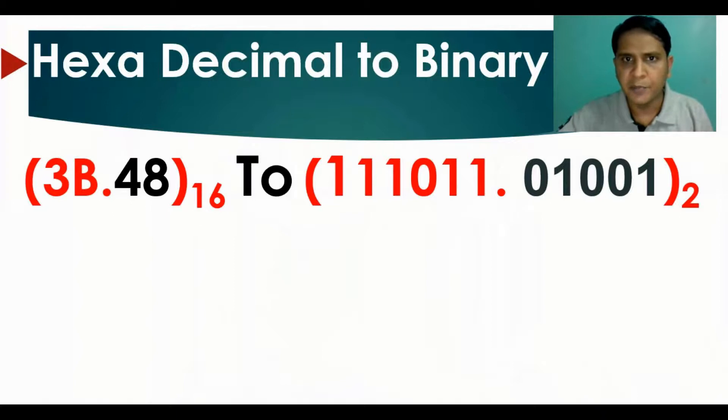So basically, this is a hexadecimal number. You can see it is in base 16: 3B.48. Now we have to convert this hexadecimal number into a binary number.